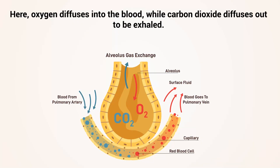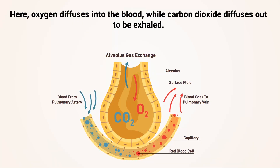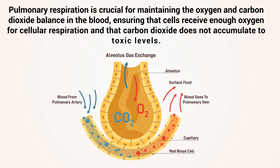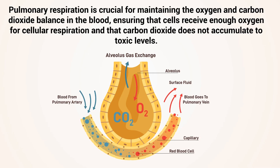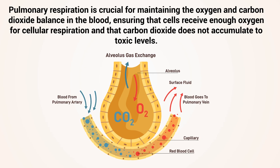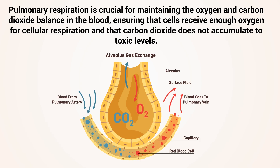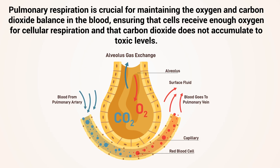Here, oxygen diffuses into the blood, while carbon dioxide diffuses out to be exhaled. Pulmonary respiration is crucial for maintaining the oxygen and carbon dioxide balance in the blood, ensuring that cells receive enough oxygen for cellular respiration, and that carbon dioxide does not accumulate to toxic levels.